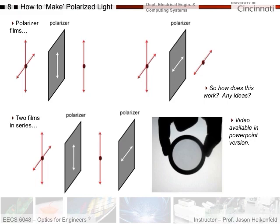I could have two polarizer films in series. Unpolarized light enters the first polarizer — one polarization gets through — and then hits the second polarizer, which is rotated 90 degrees, such that no light can make it through the system. It will look completely black. You'll see an example of two of these films overlapping where they're 90 degrees rotated — you can do this in the lab.